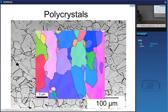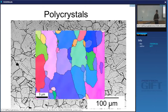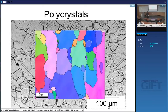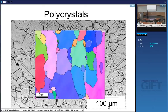An optical micrograph gives you the shape and size of crystals but doesn't tell you anything about their orientation. In an orientation map, the colors represent different crystal orientations — you have not only the shape and size of each crystal but also its crystallographic orientation. This technique can be used on a scanning electron microscope or transmission electron microscope because you get diffraction information from each individual crystal.